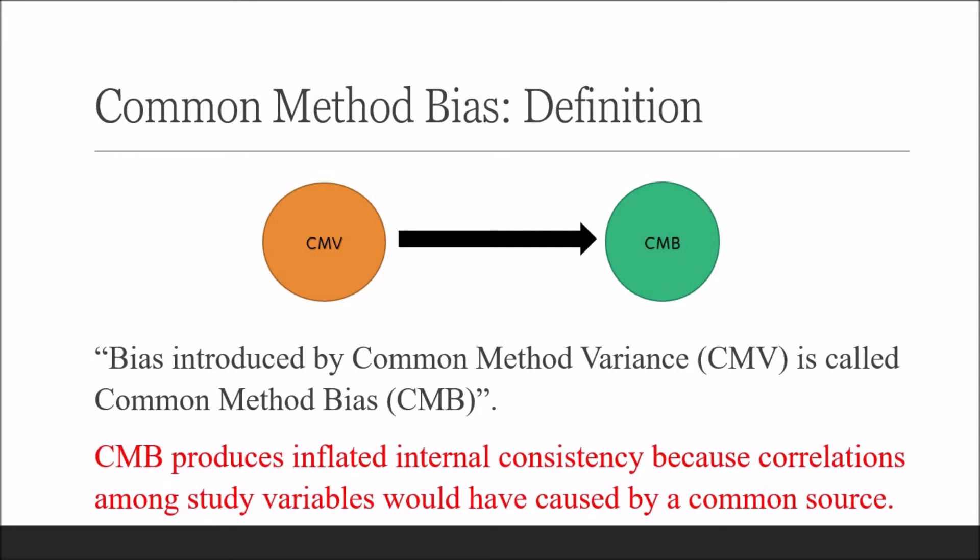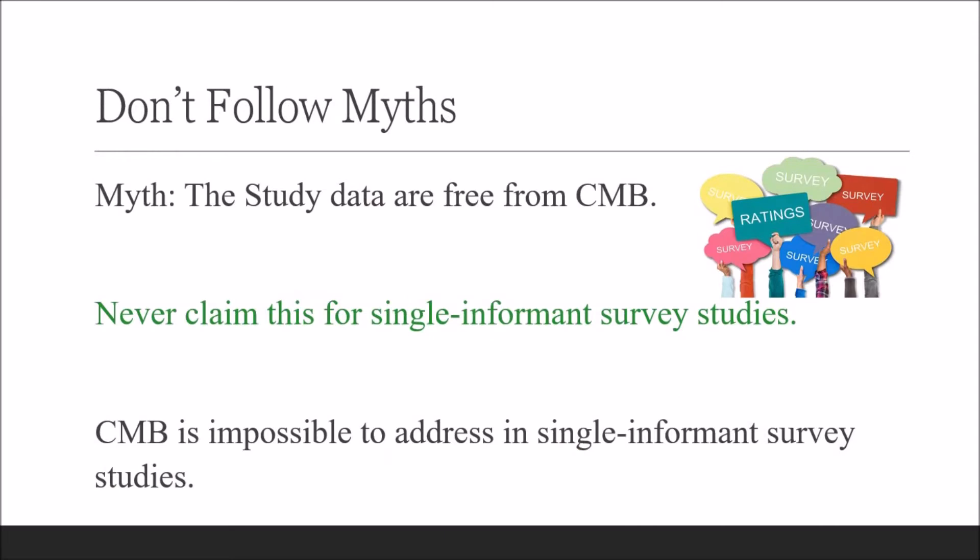Common method bias produces inflated internal consistency because correlations among study variables would have been caused by a common source. Never claim that single informant survey study data are free from CMB. It's a myth. Always remember that common method bias is impossible to address in single informant survey studies because informants are the source of bias and they cannot be tested statistically or otherwise.